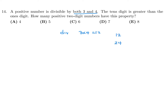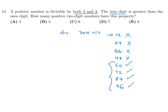The two-digit multiples of 12 are: 12, 24, 36, 48, 60, 72, 84, and 96. We only want the ones where the tens digit is greater than the ones digit. Checking each: 60 — 6 is greater than 0; 72 — 7 is greater than 2; 84 — 8 is greater than 4; 96 — 9 is greater than 6. So those four qualify, and the answer is A for number 14.